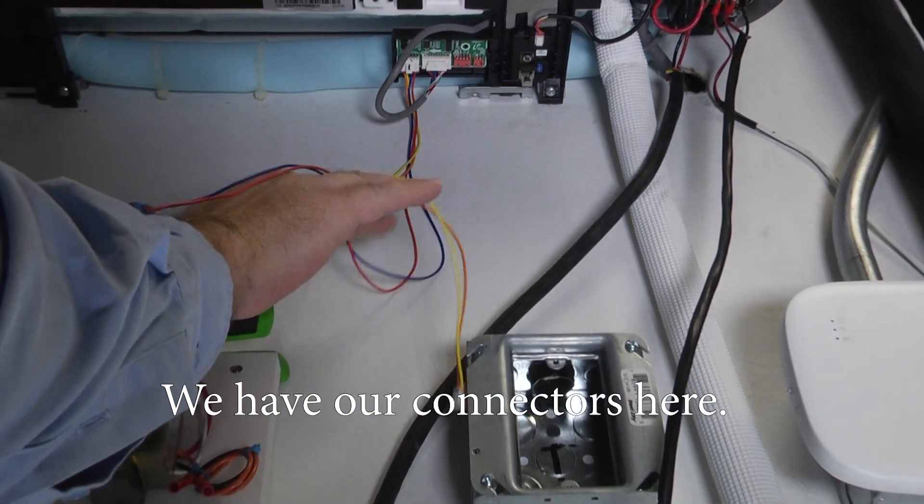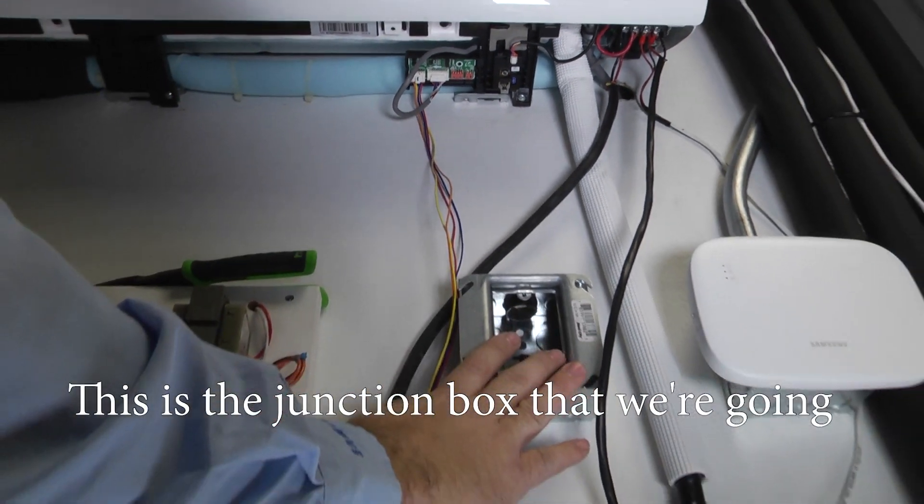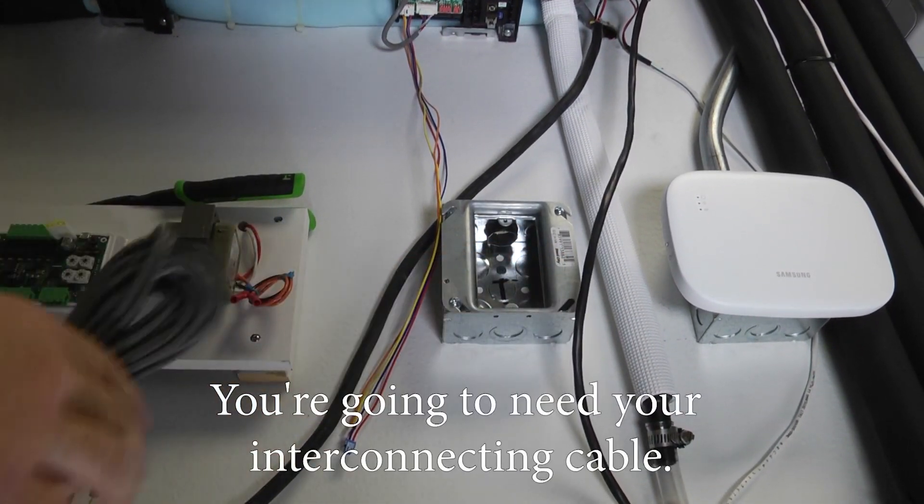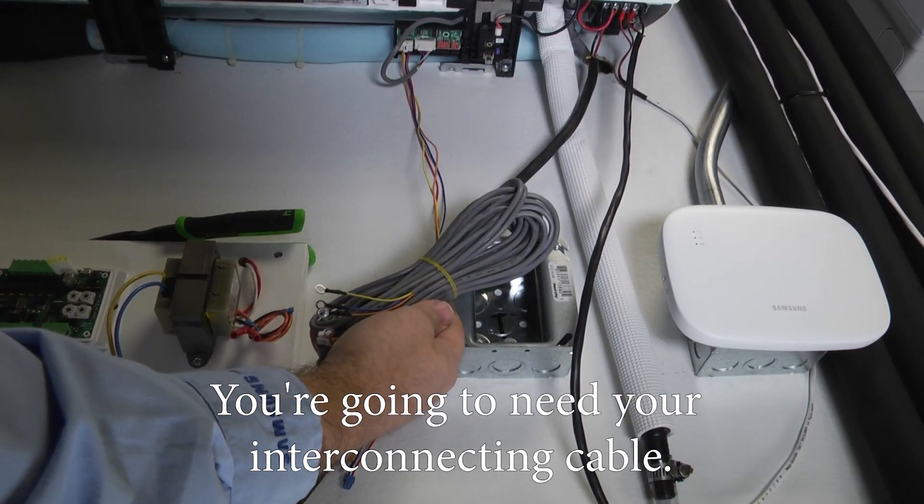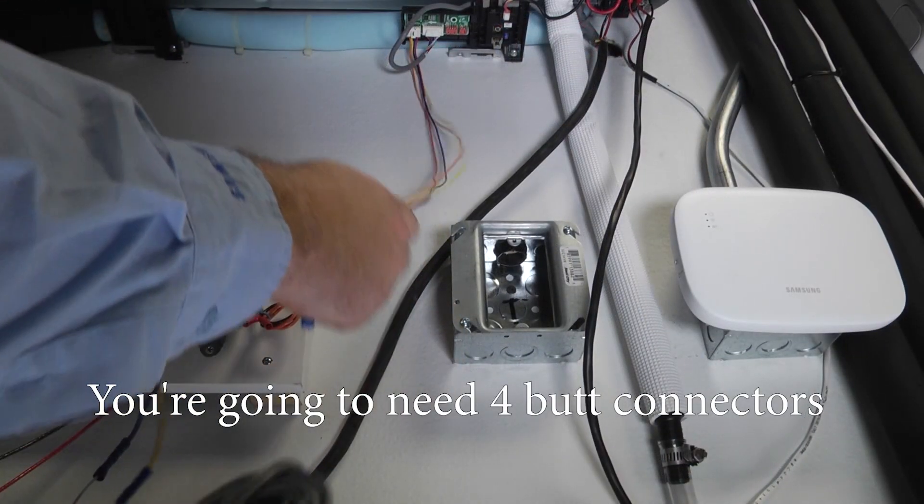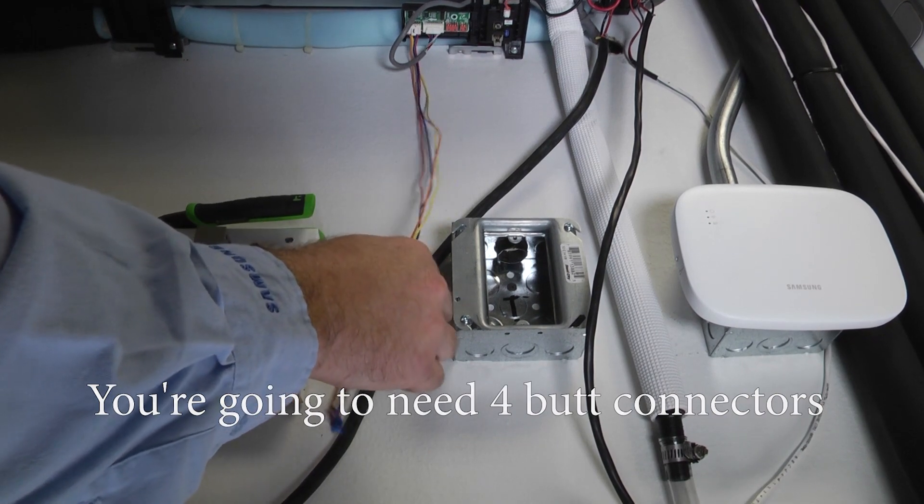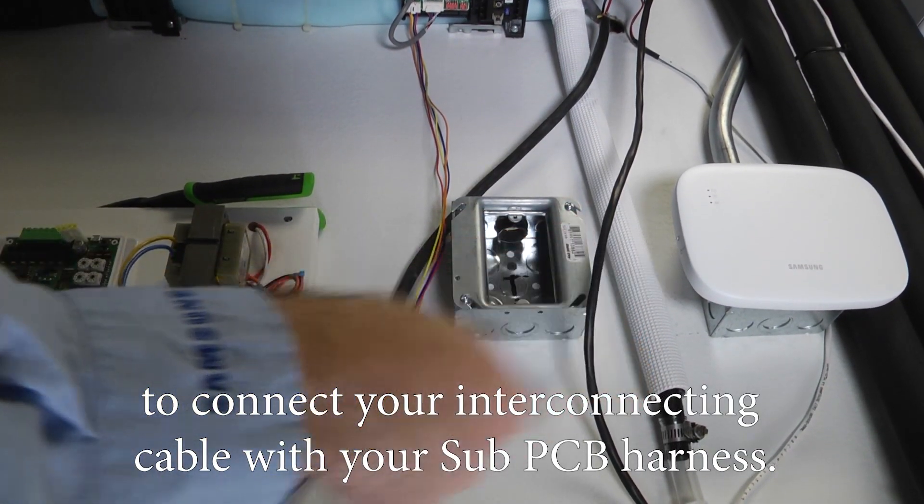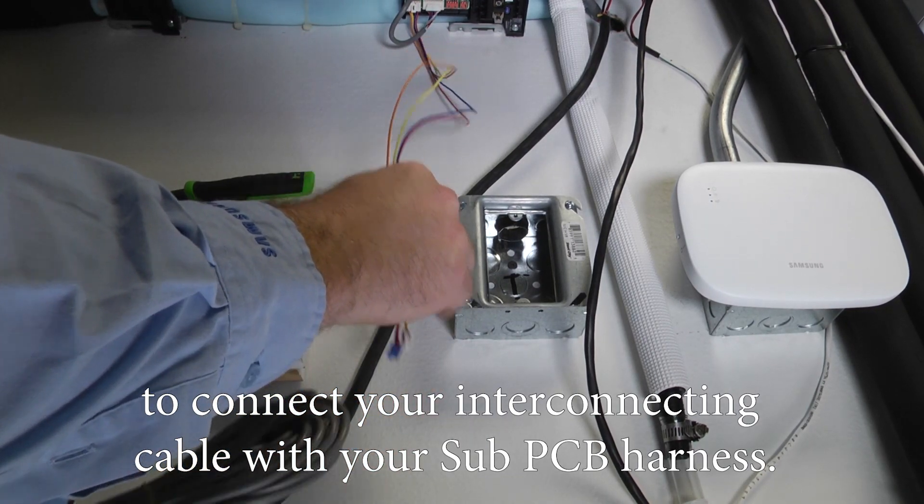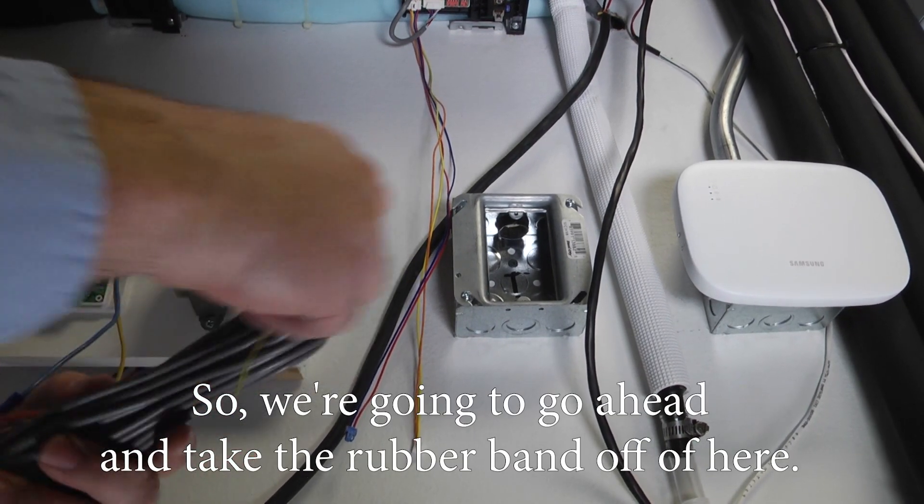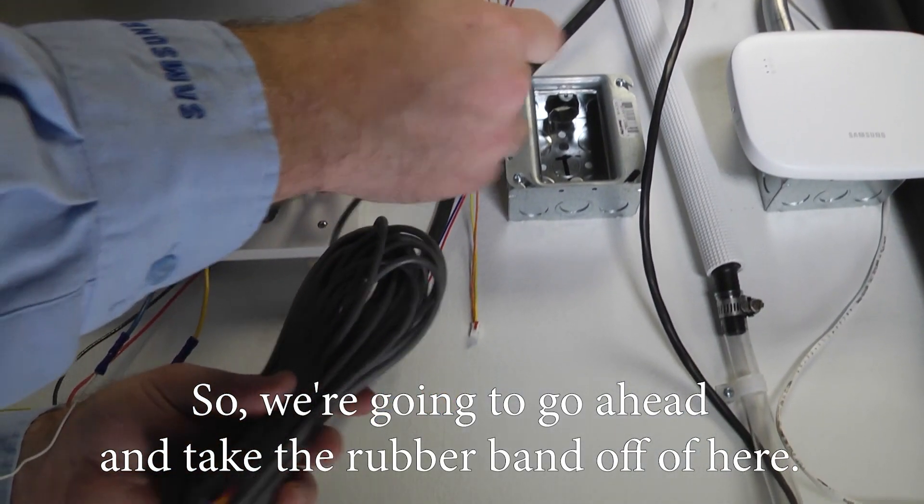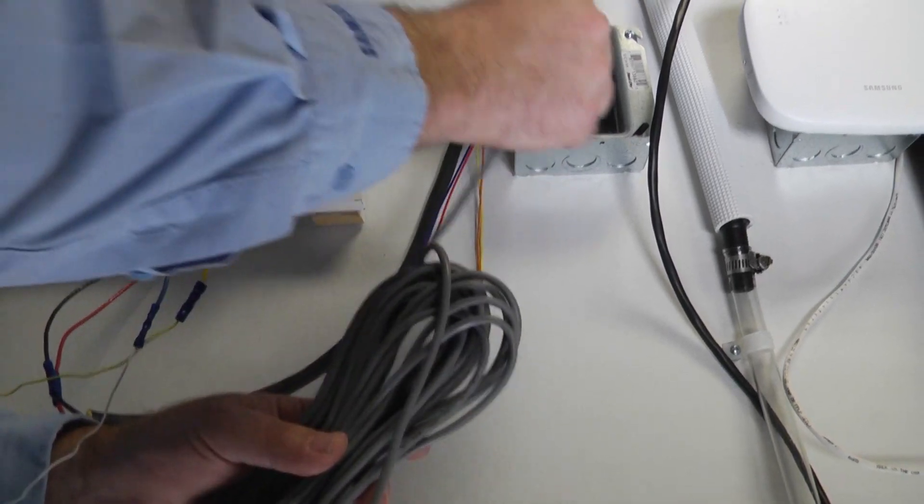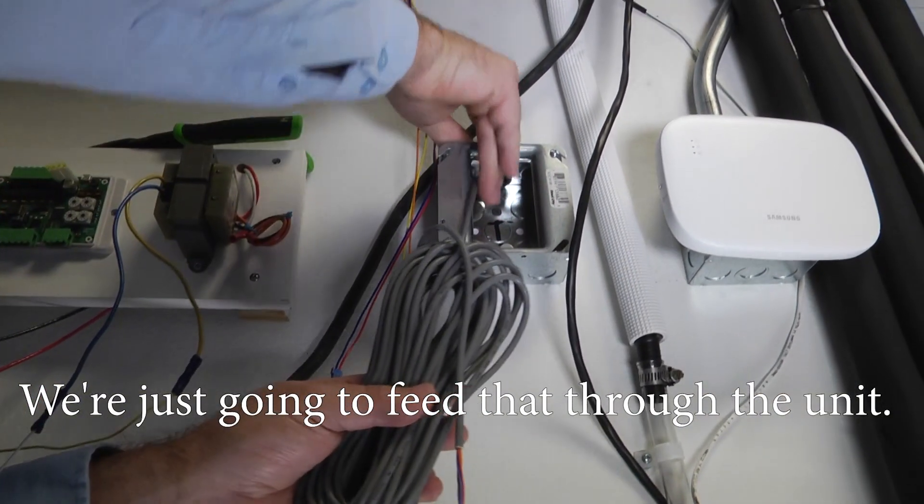Okay so we have our connectors here, this is the junction box that we're going to be installing the wired remote control. You're going to need your interconnecting cable so you're going to need four butt connectors to connect your interconnecting cable with your sub PCB harness. So we're going to go ahead and take the rubber band off here. It comes with three ring connectors. We're just going to feed that through the unit.